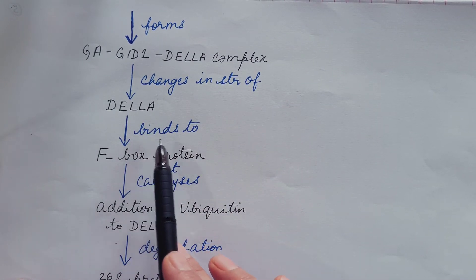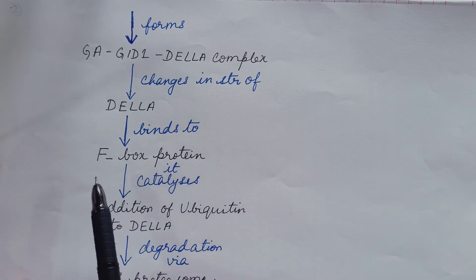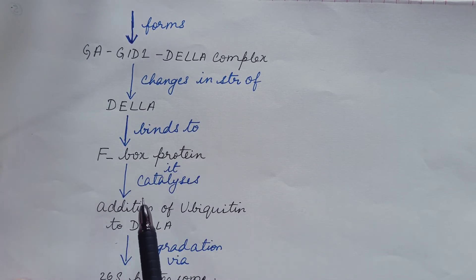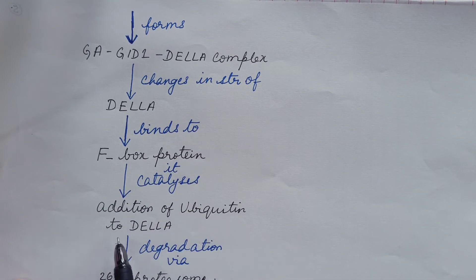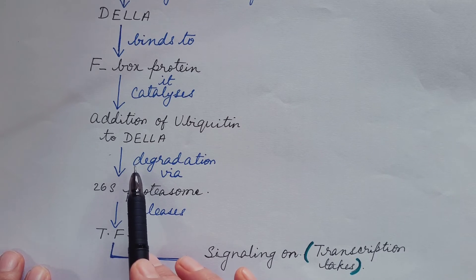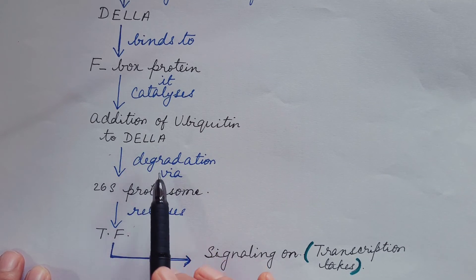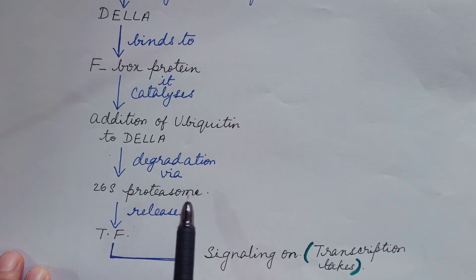Now DELLA protein is able to bind to F-box protein. This F-box protein catalyzes addition of ubiquitin to DELLA or ubiquitination of DELLA.